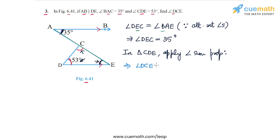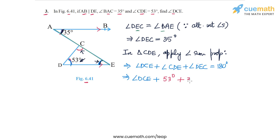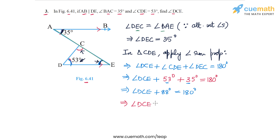Angle DCE plus angle CDE (53 degrees) plus angle DEC (35 degrees) equals 180 degrees. So angle DCE plus 53 plus 35, which is 88 degrees, equals 180 degrees. Therefore angle DCE equals 180 minus 88, which is 92 degrees. The measure of angle DCE is 92 degrees, and this is the answer to question number 3.